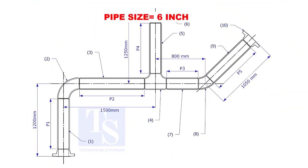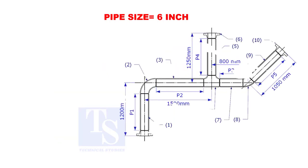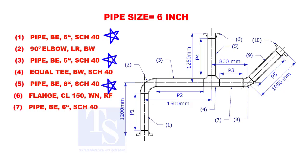Assume that the pipe size is 6 inches. Item numbers 1, 3, 5, 7, and 9 are pipes.